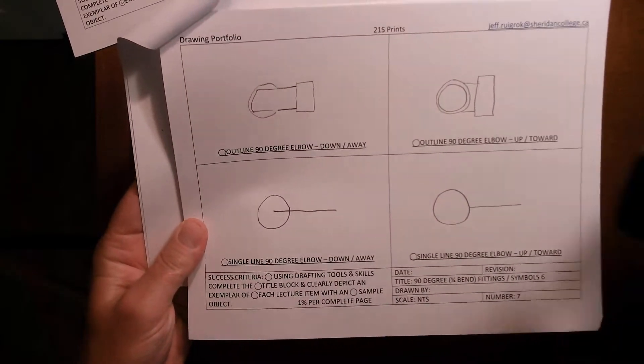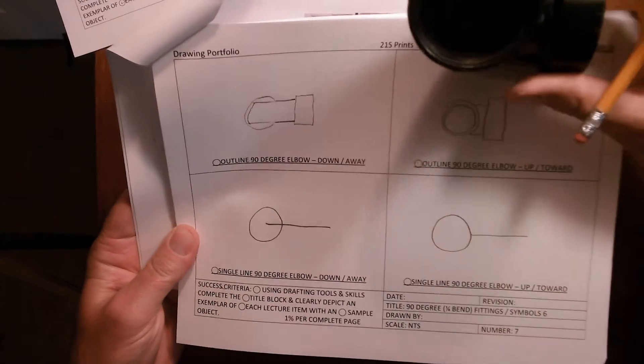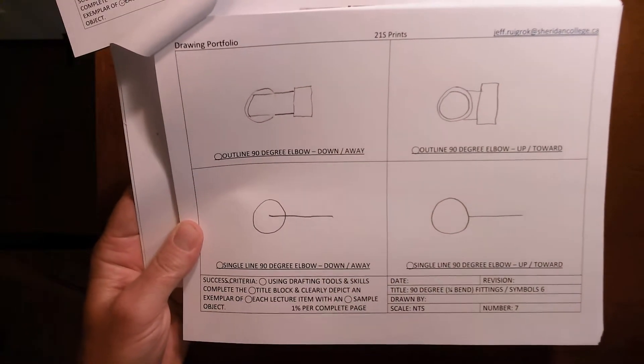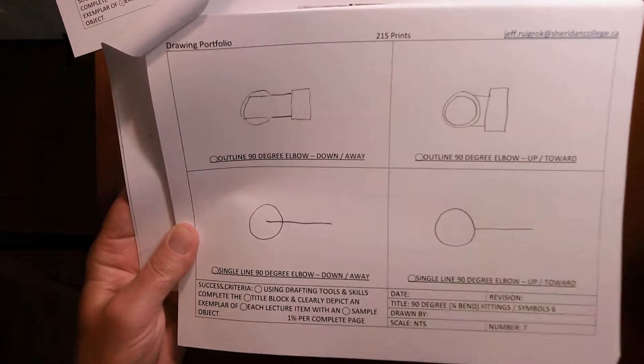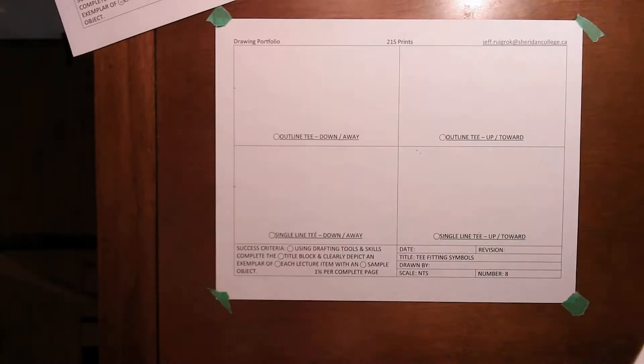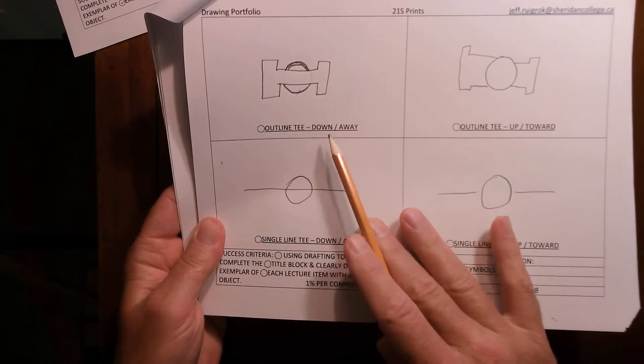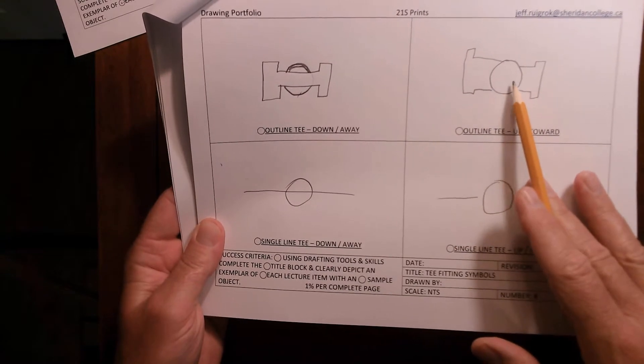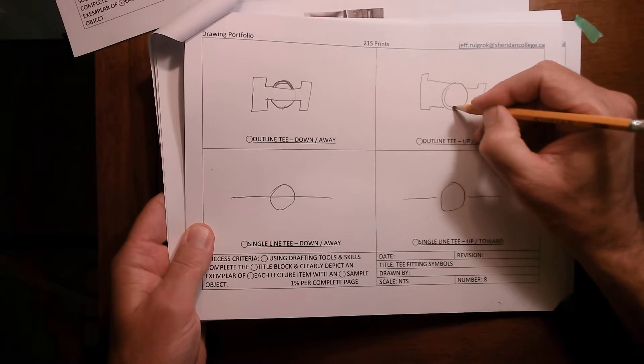This one was based on a 90 degree looking down, a 90 degree looking up, and then centerline symbols that represent those two fittings. So I've already done the exact same thing but for my T away or down and away, looking at the back of it, and then looking at the face of it, where you can see right inside the fitting.